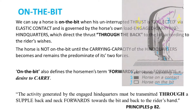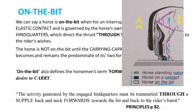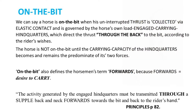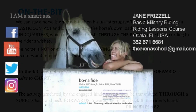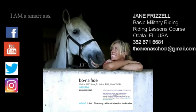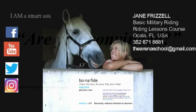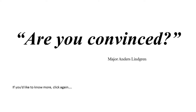Here's a quote on the bit: 'The activity generated by the engaged hindquarters must be transmitted through a supple back and neck forwards towards the bit and back to the rider's hand.' That's from Principles, page 82. Thank you for watching. I hope this has been helpful. As we said earlier, this month of July 2019, from now on every video that we make will have a citation to a bonafide riding text. If you would like the entire list of definitions, please contact me and I'll email it to you. Horse training is a system and a language, and it has doctrines, and it's not complicated, and it doesn't take forever. We'll take you the right way.